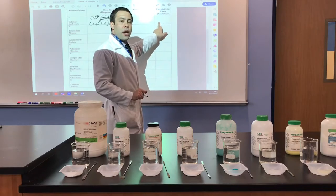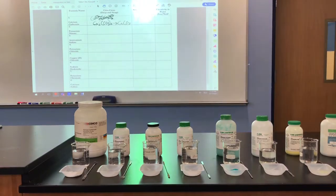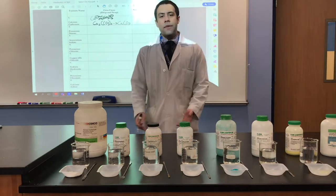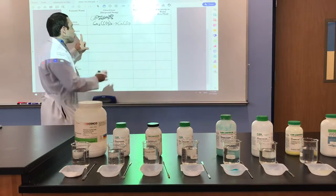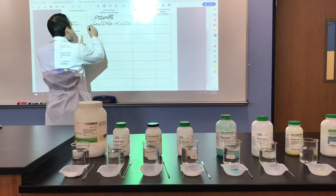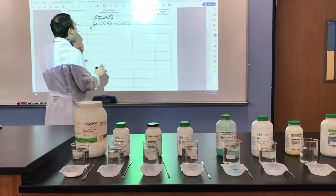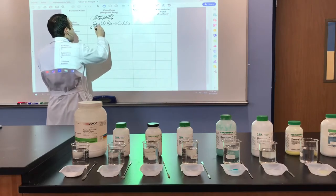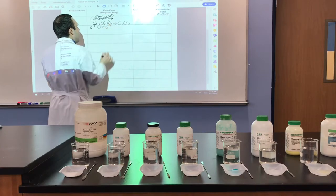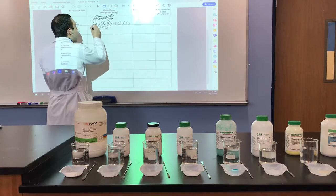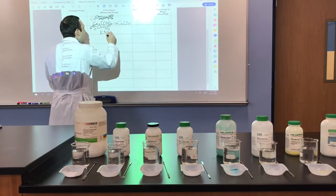We'll pause here so that you can fill out the rest of the worksheet. For the next one, potassium nitrate — potassium, element 19, is a group 1 element, so it has a charge of positive 1. Nitrate is a polyatomic on Table E with a charge of negative 1. When you perform the criss-cross drop-swap method, you get KNO3.